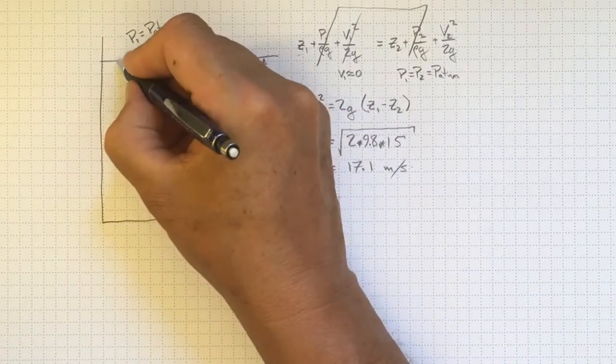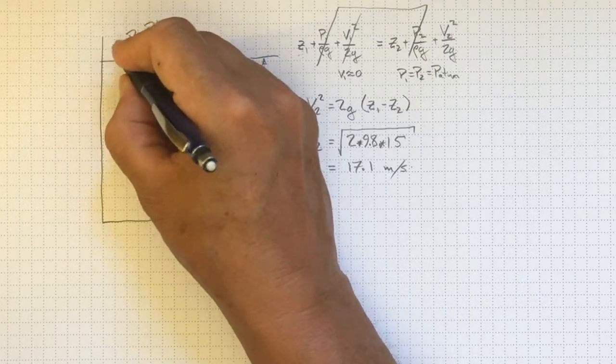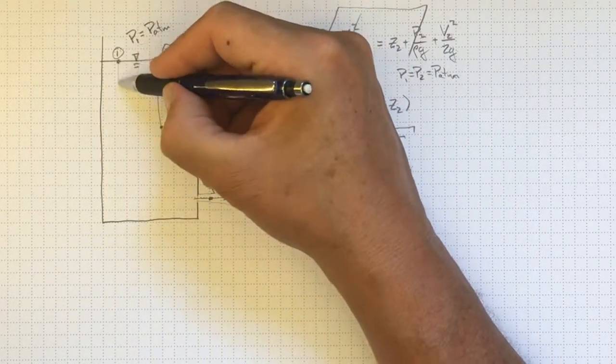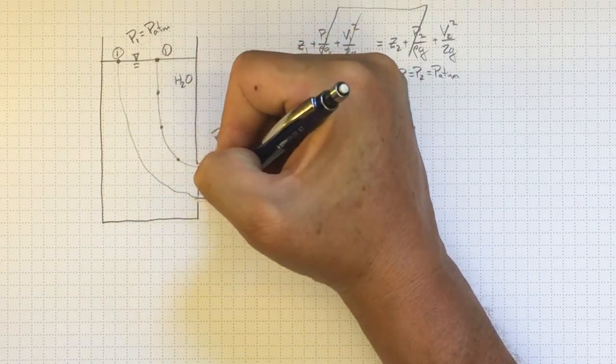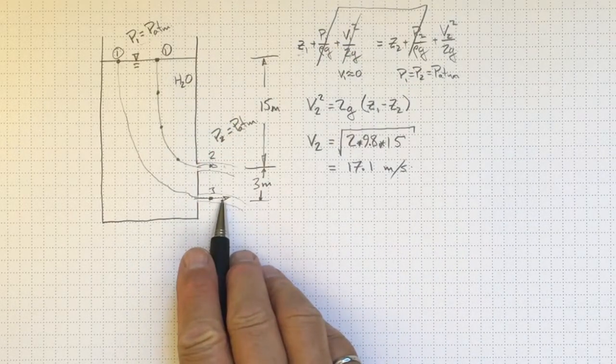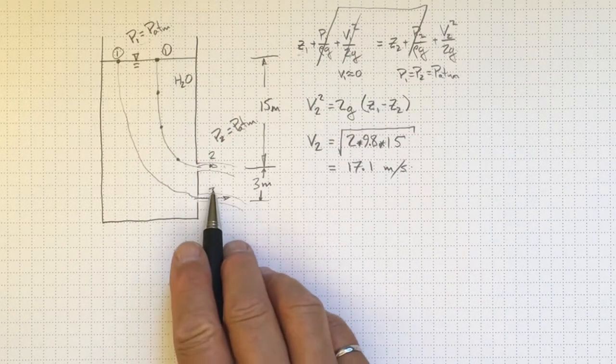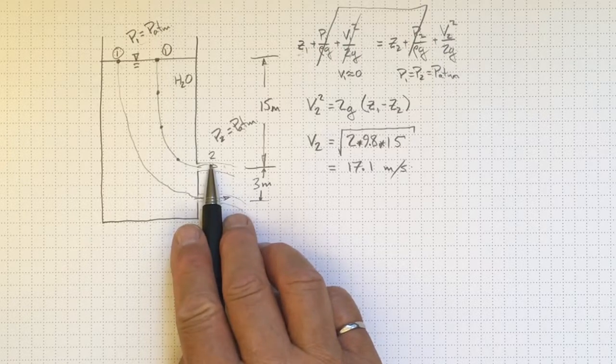We can take another streamline with another location one. And here's location three. We can follow that streamline down here. Comes out the sidewall of the tank. It's going to go faster than the fluid flowing up here.